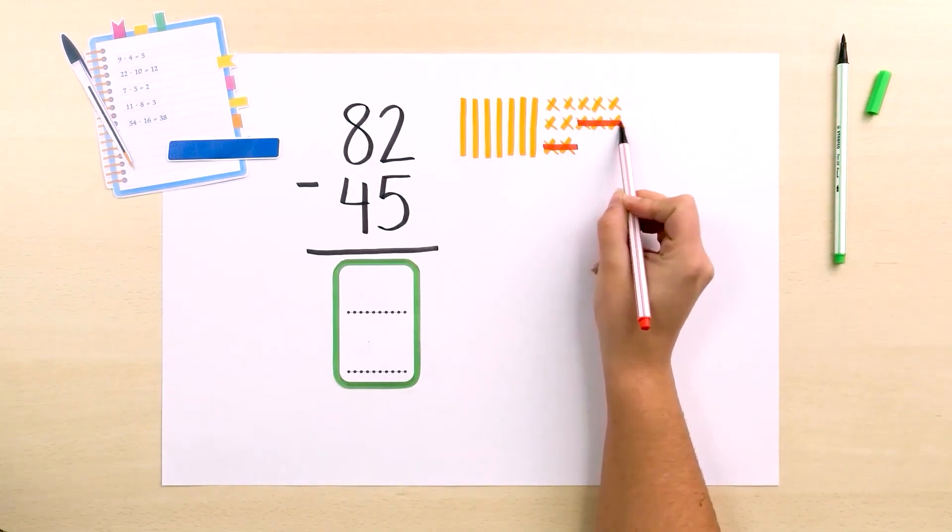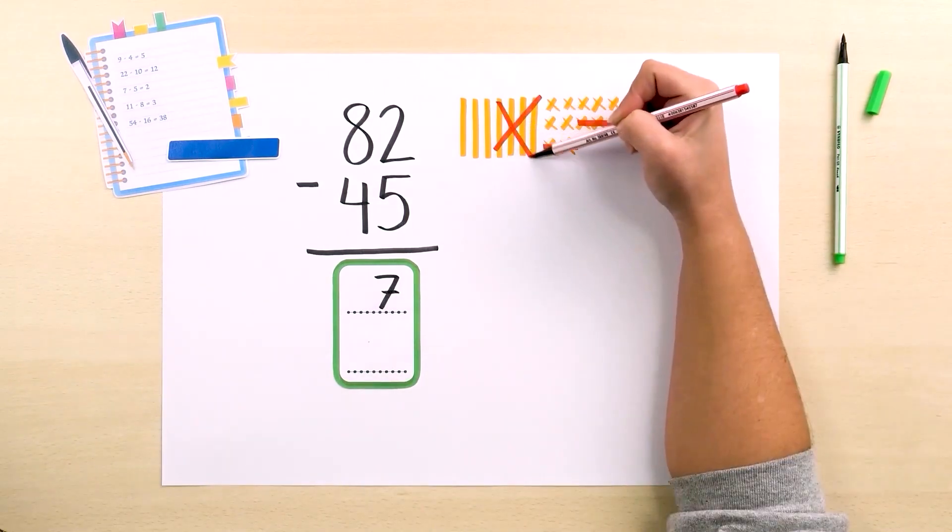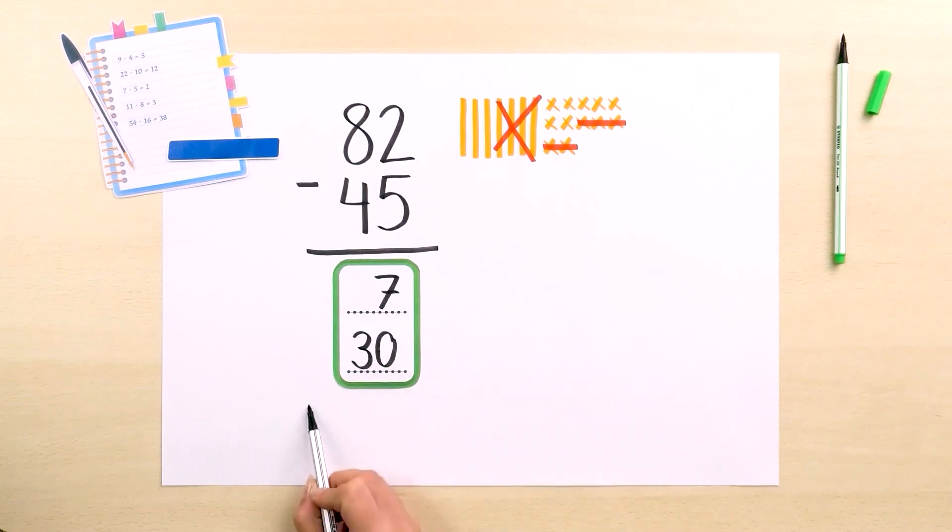Now we take away 5 cubes, and we are left with 7. Then we take away 4 bars, leaving us with 3. So 82 minus 45 equals 37.